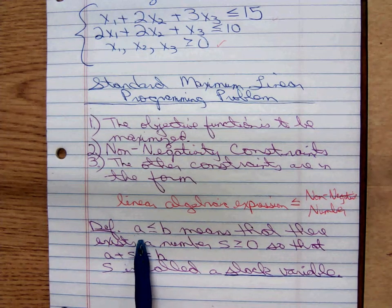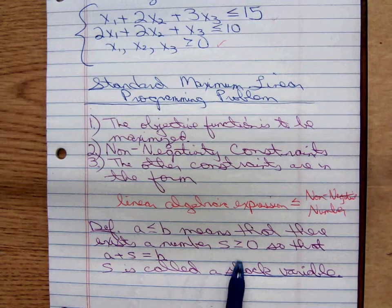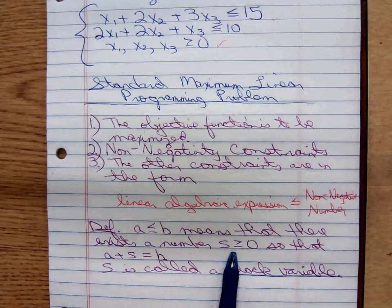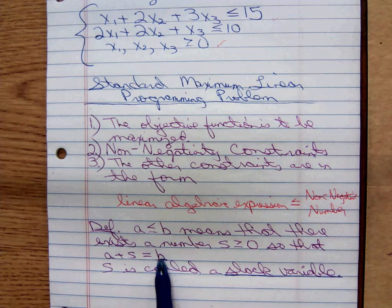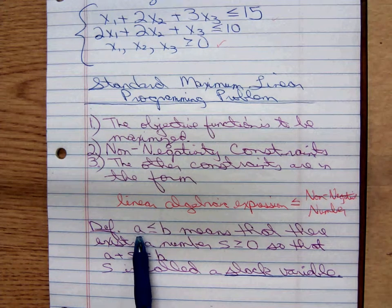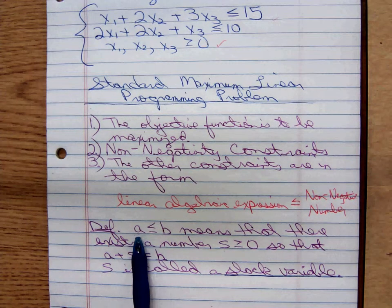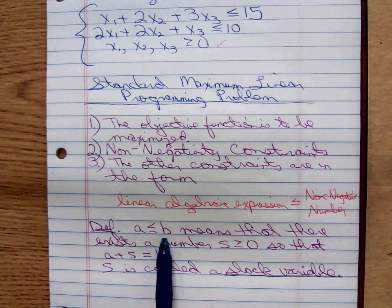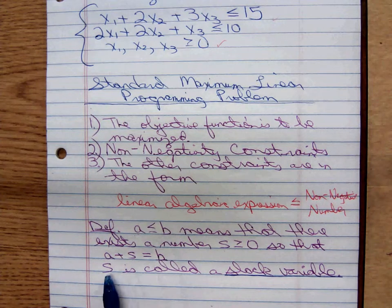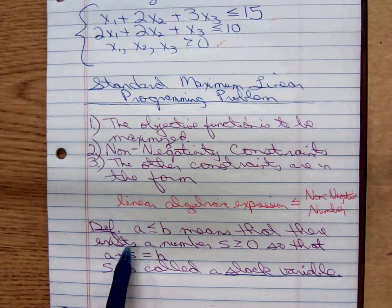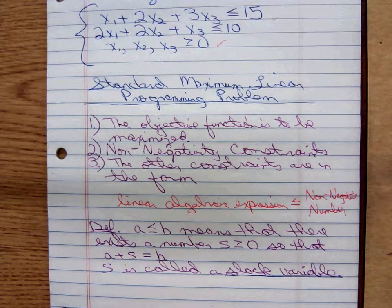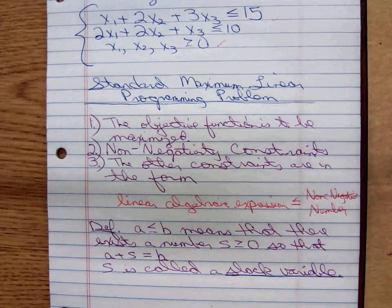a is less than or equal to b means that there exists a number s that's greater than or equal to zero, so that a plus s is equal to b. Some non-negative quantity s is going to be added to take up the slack on the left side and make it equal to the right side. So, this s value we're going to call a slack variable. It's picking up the slack on the left to make it equal to the value on the right.